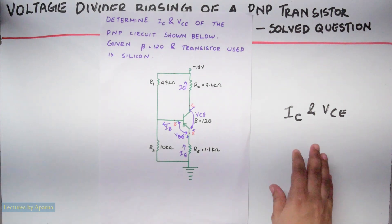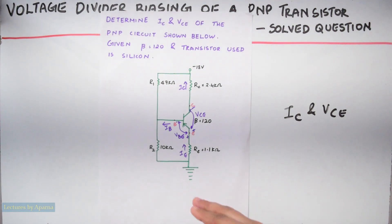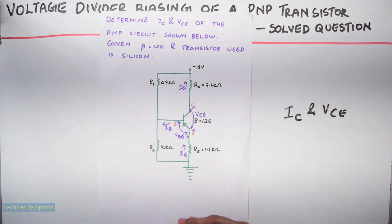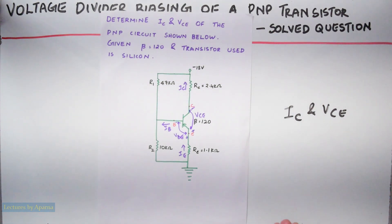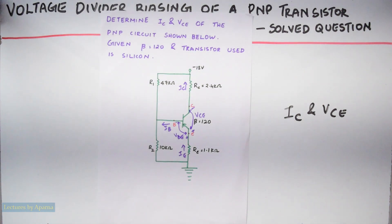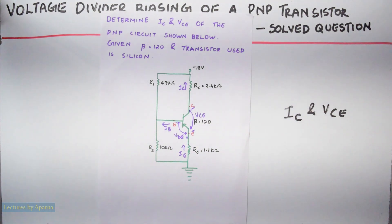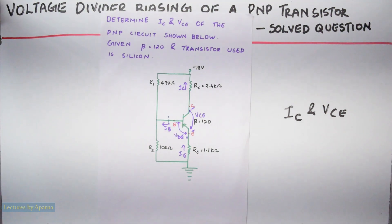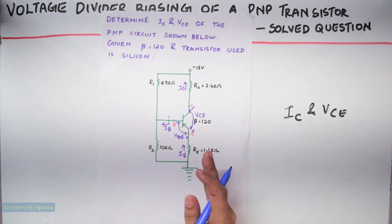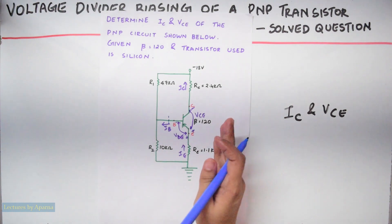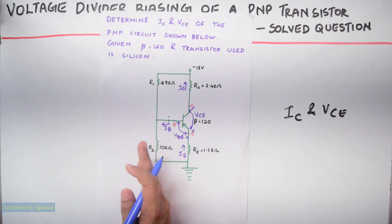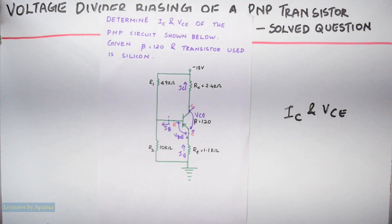To find IC and VCE, we have to analyze this circuit. First, we have to convert this circuit into its Thevenin's equivalent circuit to make analysis easier. As a first step, put a cut here. This is done to remove this portion of the circuit and consider only the input section.